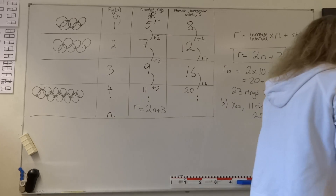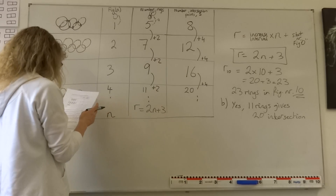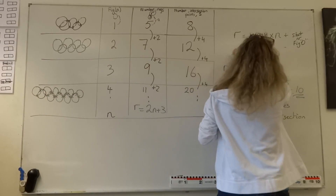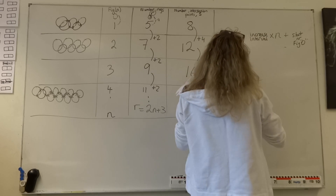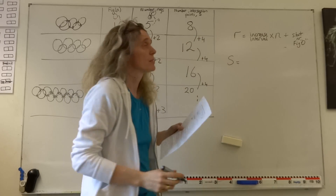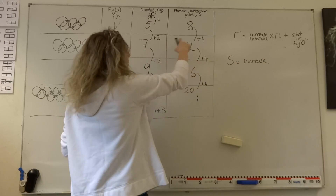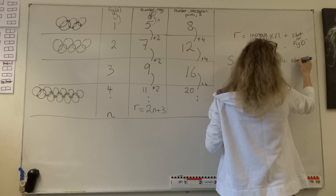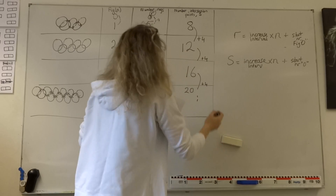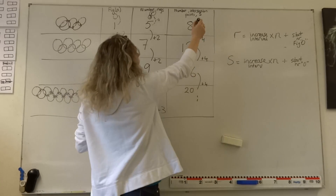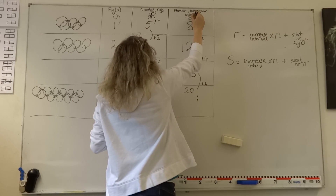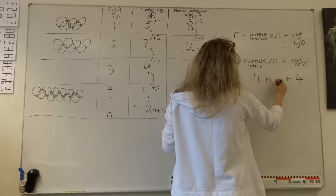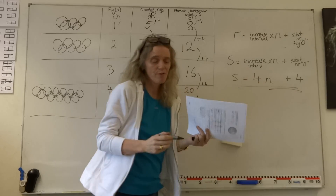For part C: in figure number 2 there are 12 intersection points. How many will there be in figure number 6? Using the same method as for rings, we use the increase interval — which is plus 4 each time — times the figure number, plus the start number. Going back to figure number 0 by subtracting 4 gives us 4 intersection points as our starting value. So the formula for intersection points is S = 4n + 4.